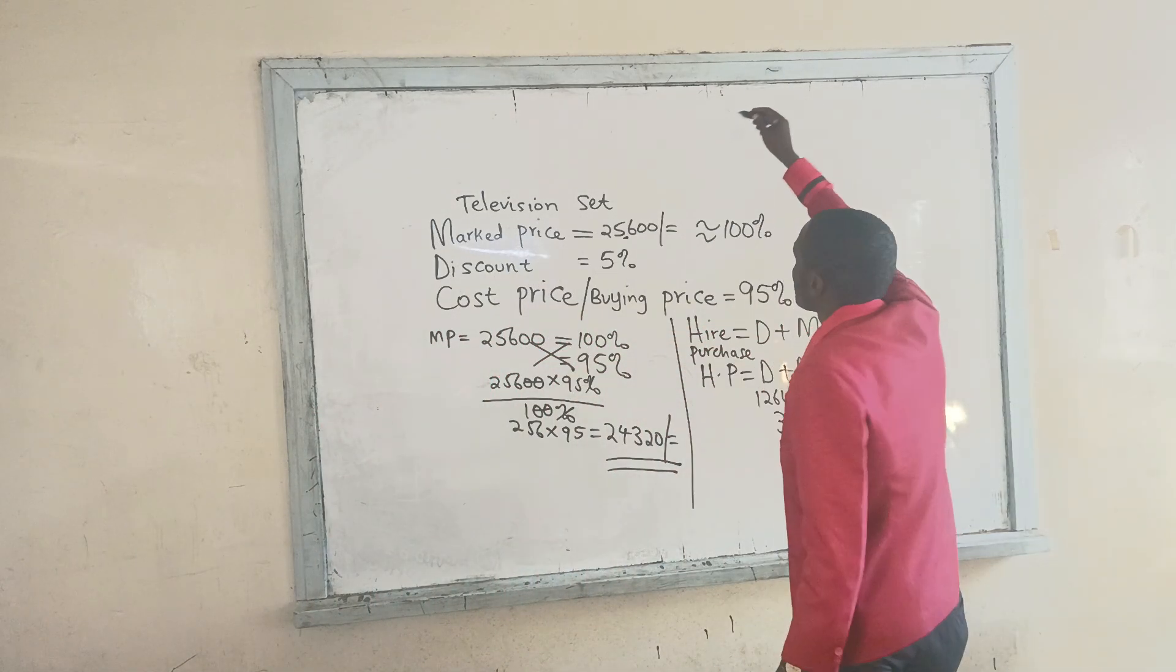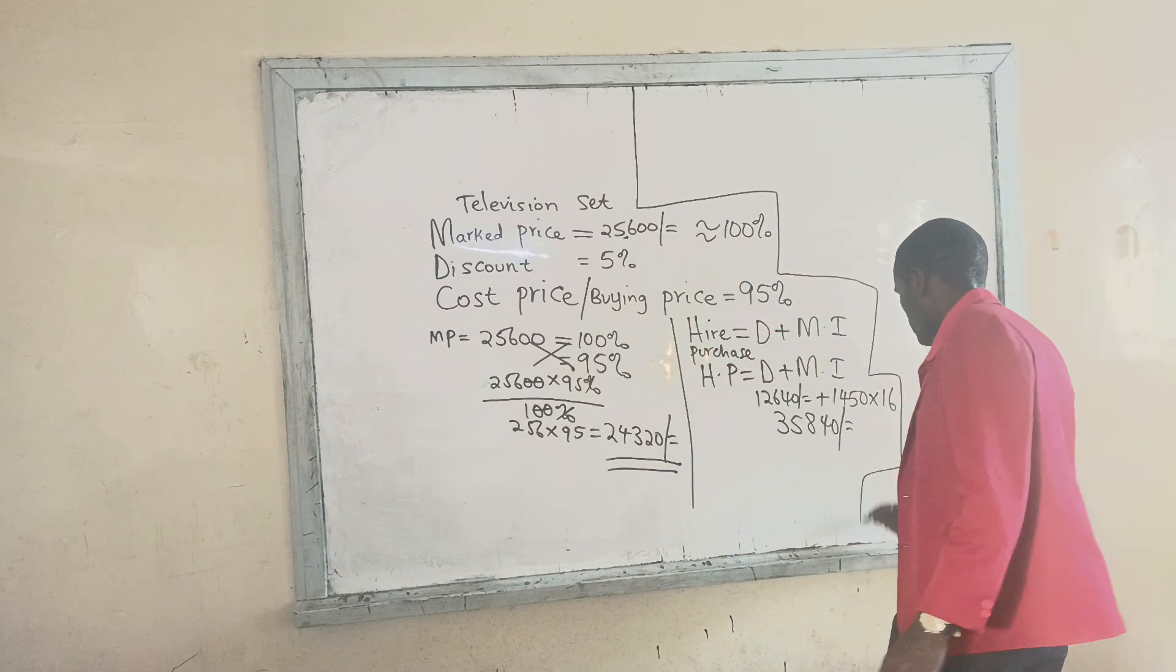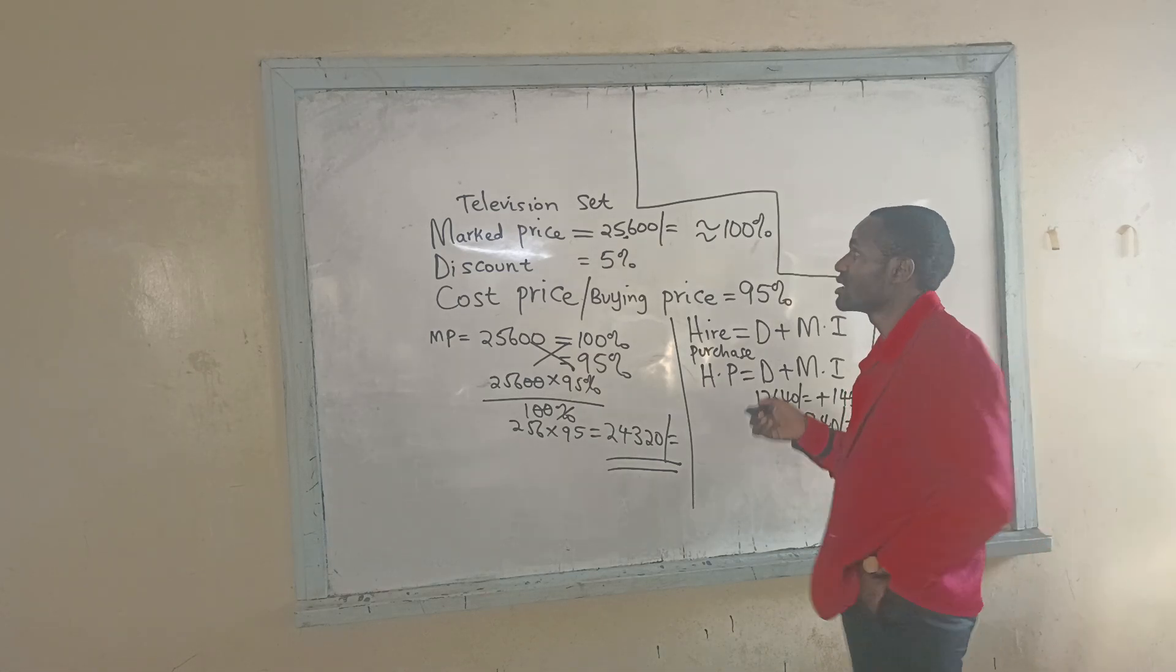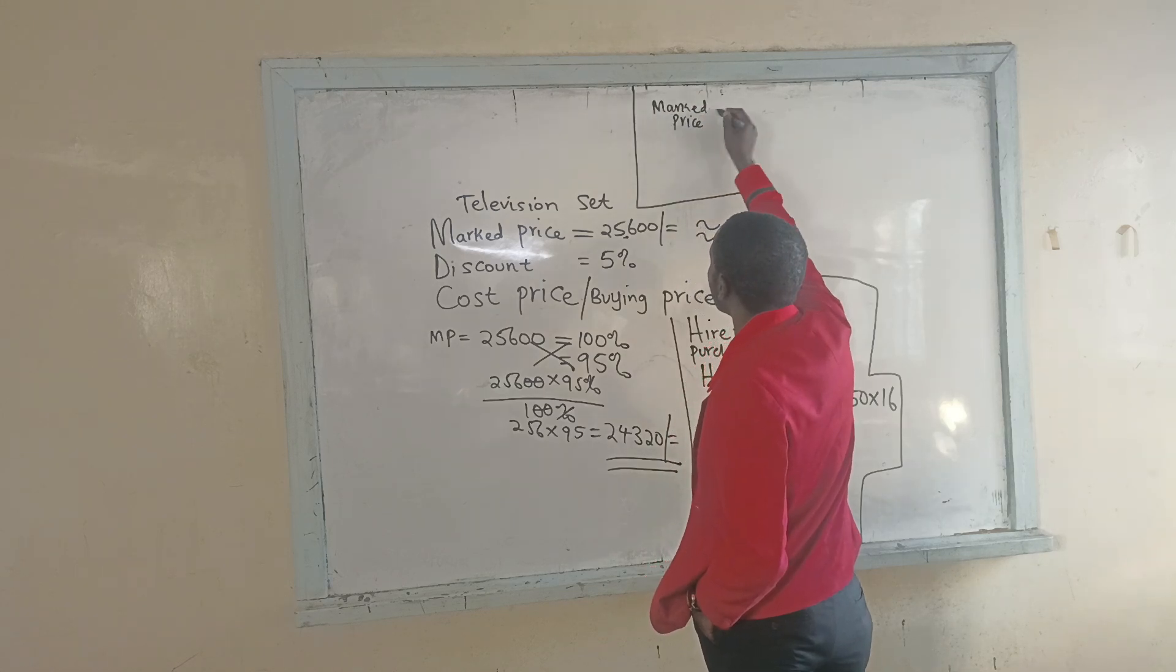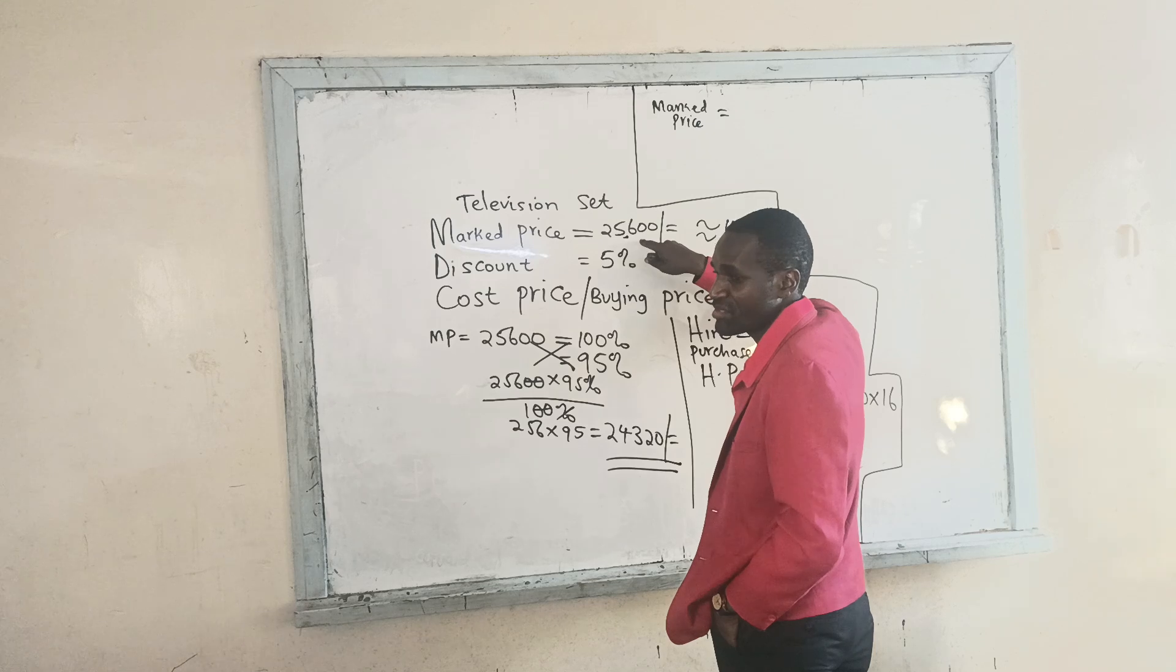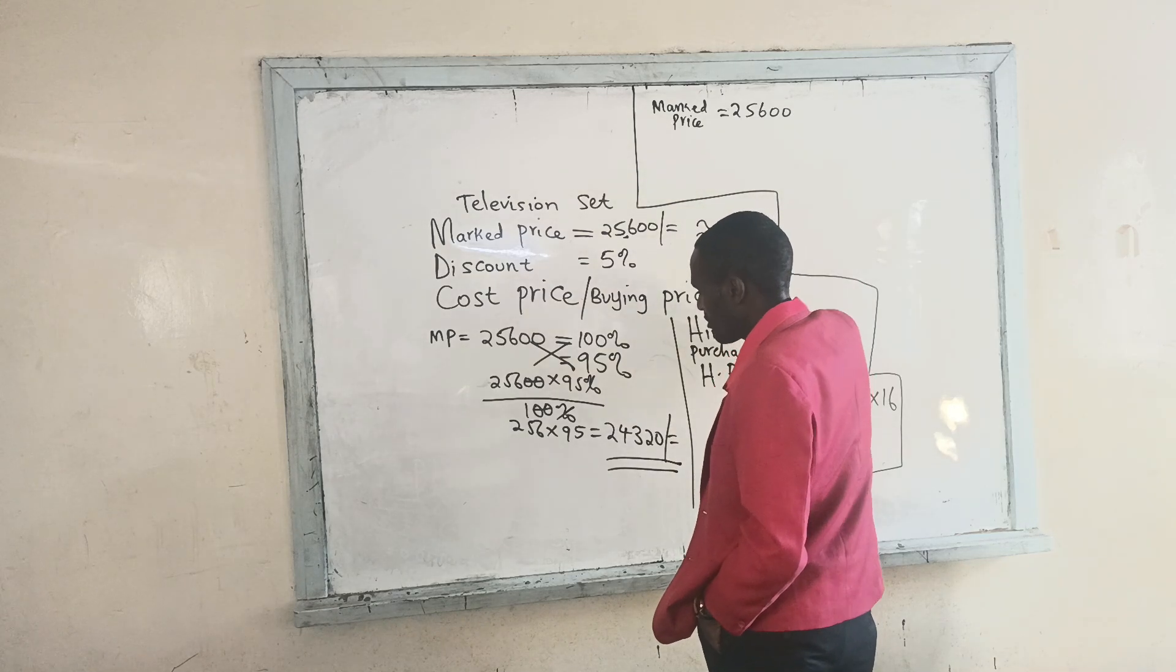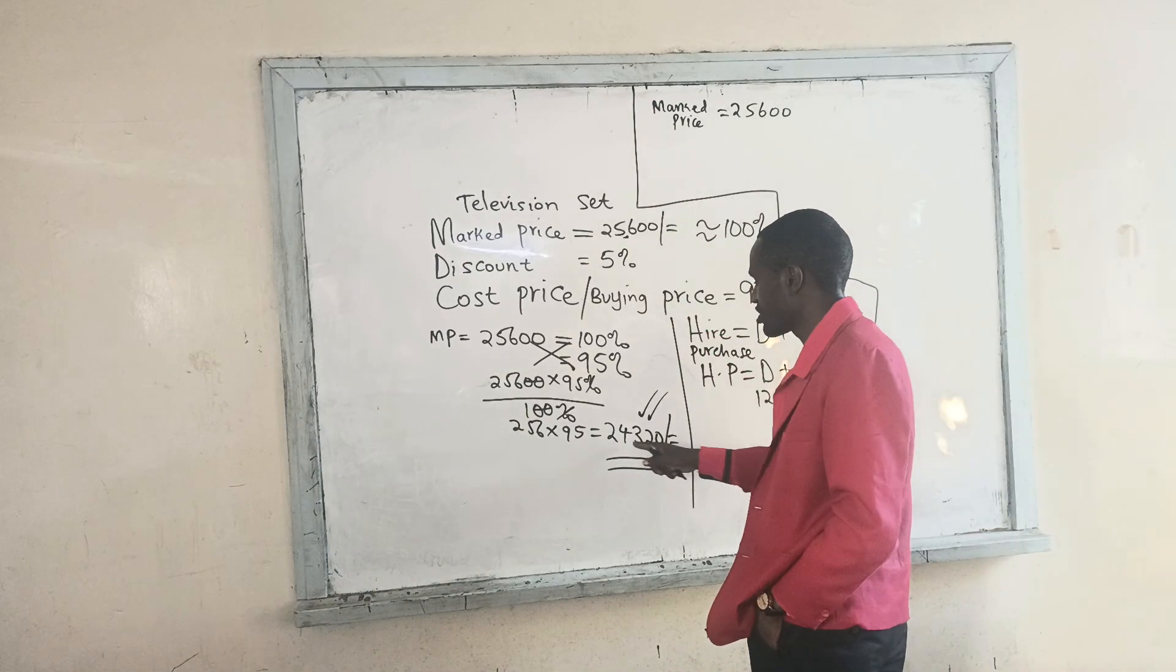I have gone to the market to obtain a television set, and unfortunately I might have found the price unfriendly to me in terms of what I have in my pocket. The marked price of this item shall always remain the same regardless of whether you are obtaining this item on cash price basis or on hire purchase terms. So the marked price is still $25,600, but I do not have that one. I may have decided to purchase that item on cash price basis. Since I am given a discount of 5%, I end up paying $24,320.